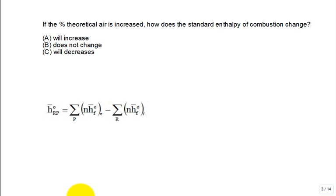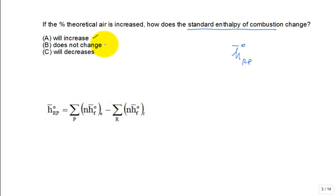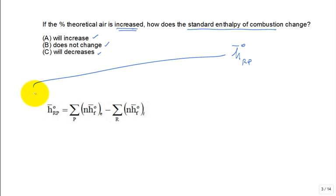Question: If the percent theoretical air is increased — say from 100% to 150% or 200% — how does the standard enthalpy of combustion change? The standard enthalpy of combustion, H-bar-R-to-P, does it increase, not change, or decrease? Here's the definition as a reminder.